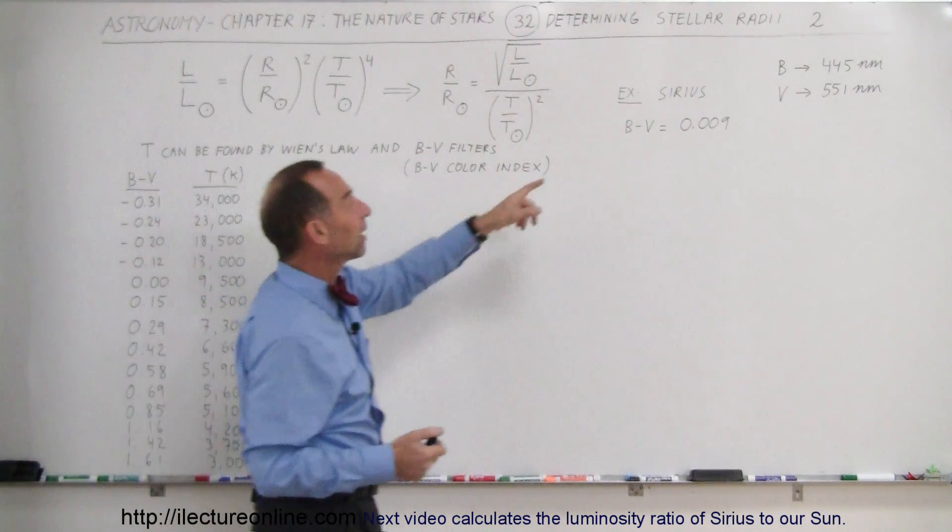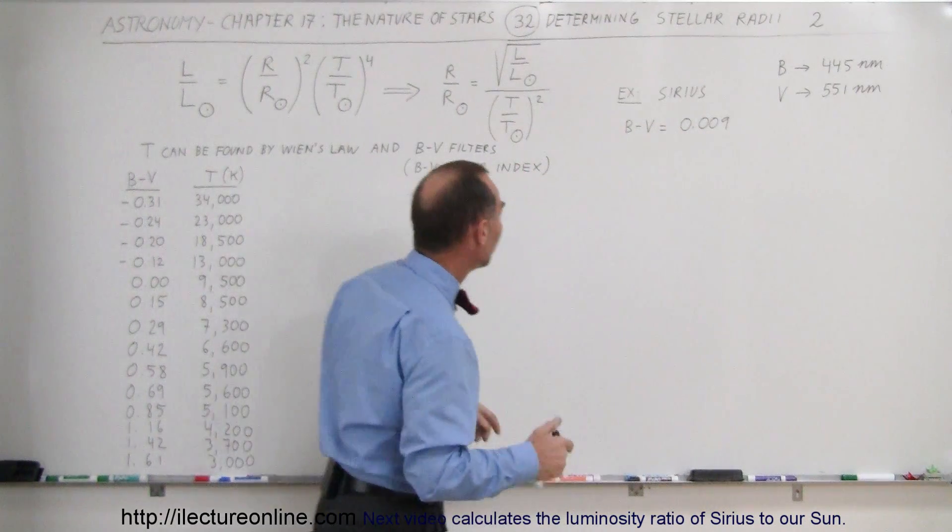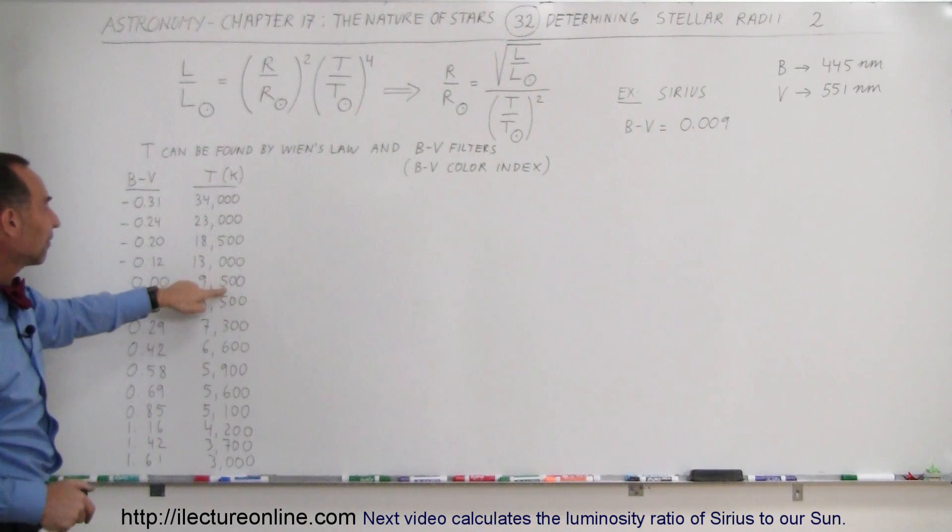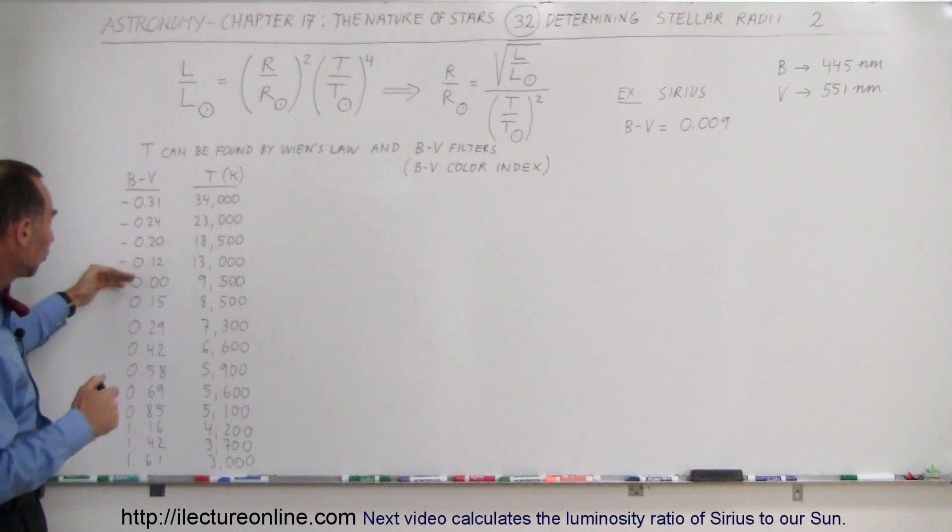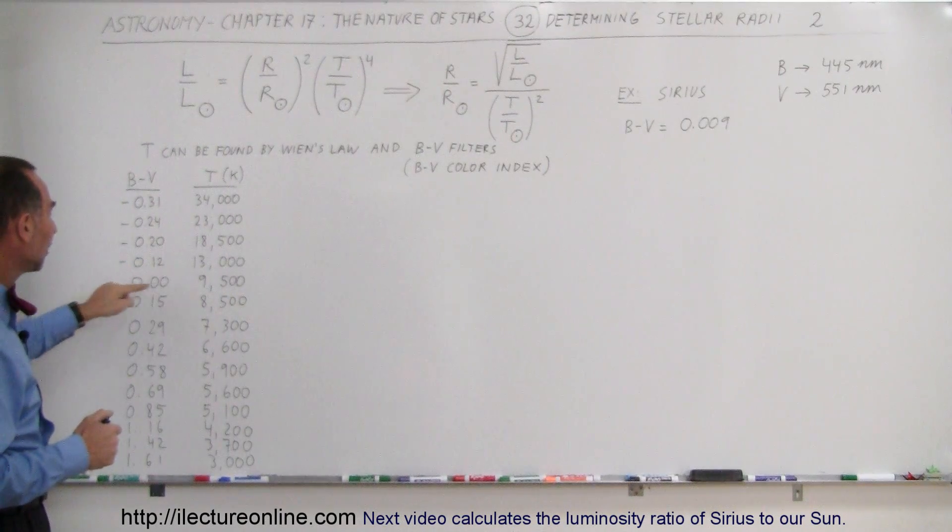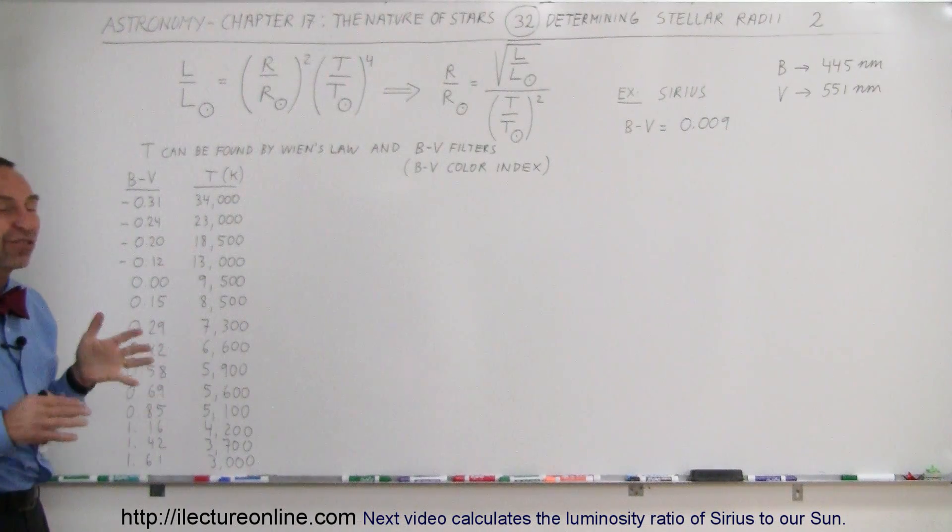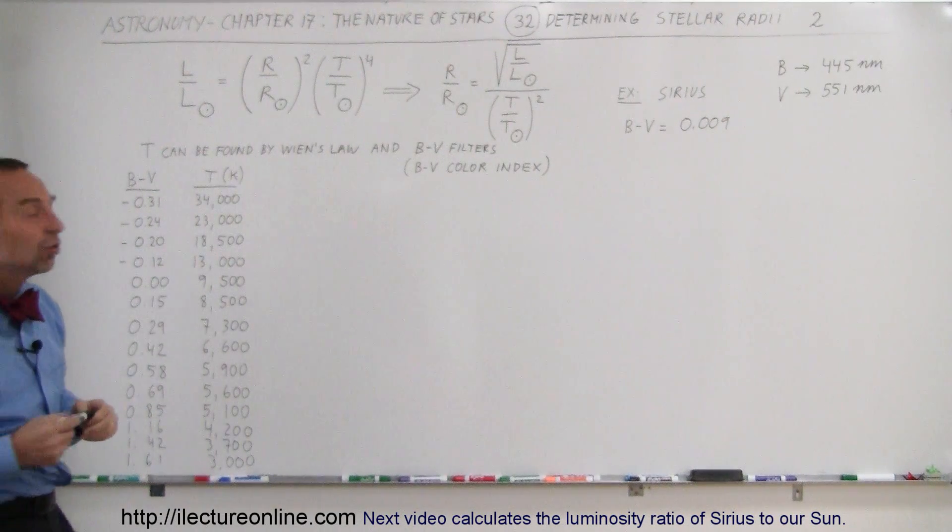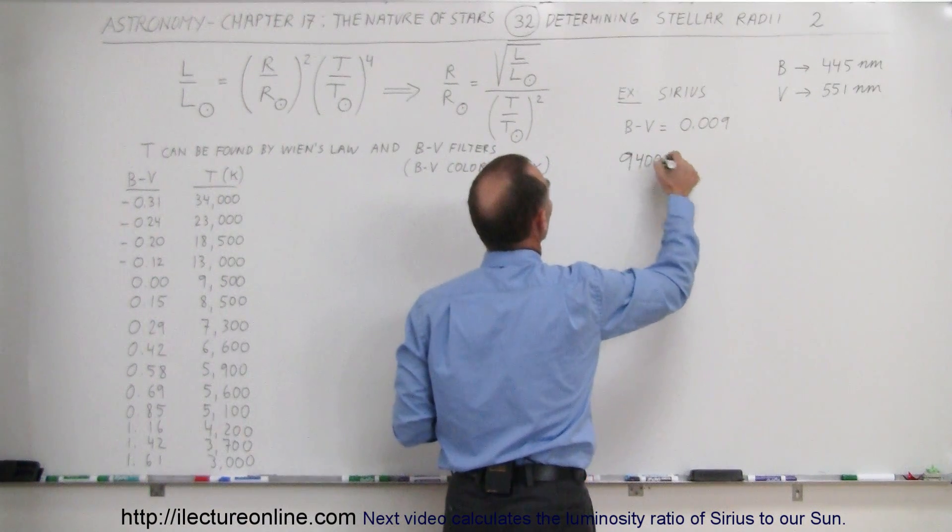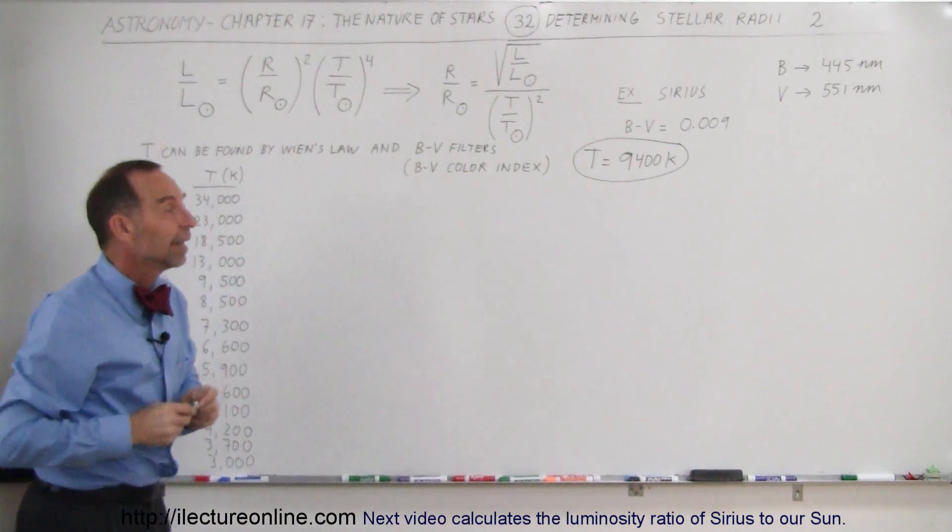In this case, when we do the B minus V calculation for Sirius, we get 0.009, very close to zero. We go back to our table and at zero, the temperature of the star is 9,500 Kelvin. It's slightly bigger than zero, about 1/15 the way from zero to 0.15. So we can say that the temperature of Sirius, the surface temperature, is about 9,400 degrees Kelvin based upon the measurements we made with the blue filter and the visible light filter.